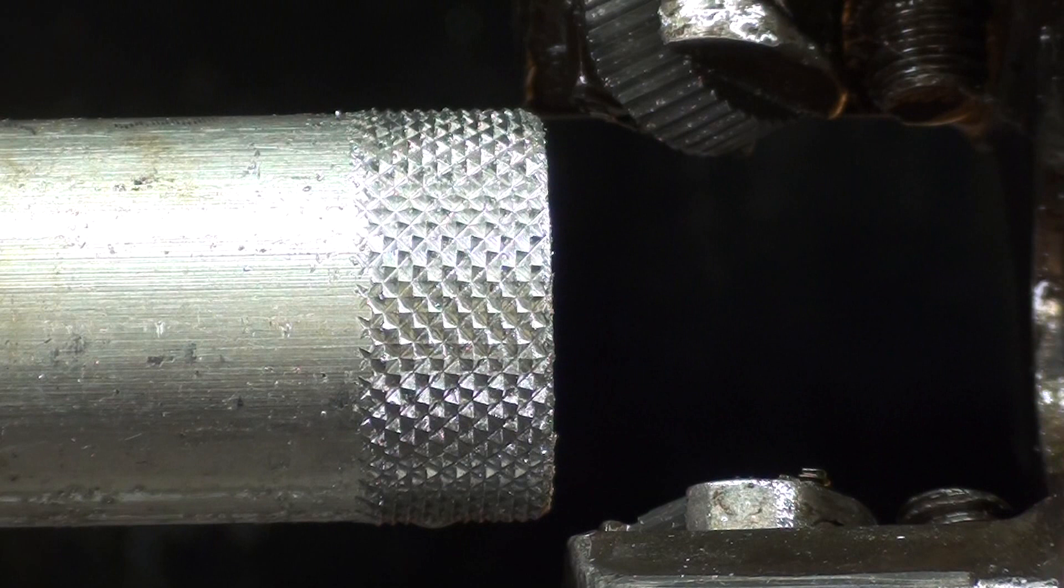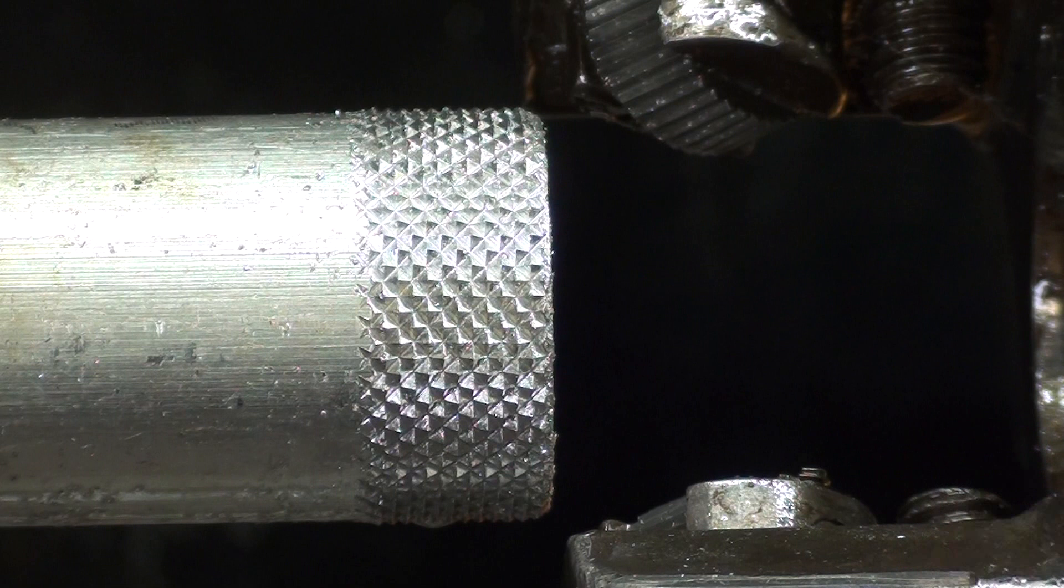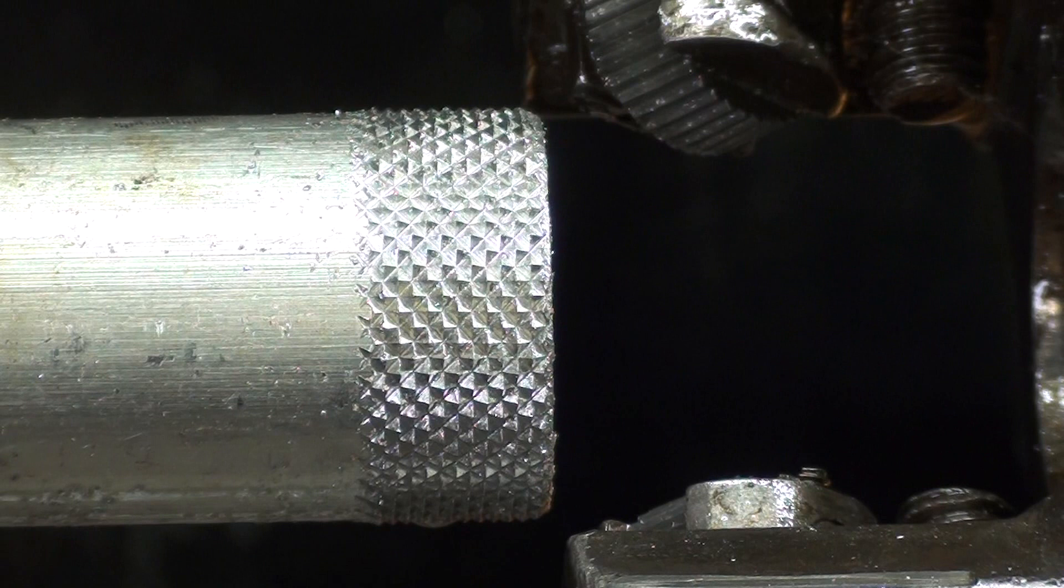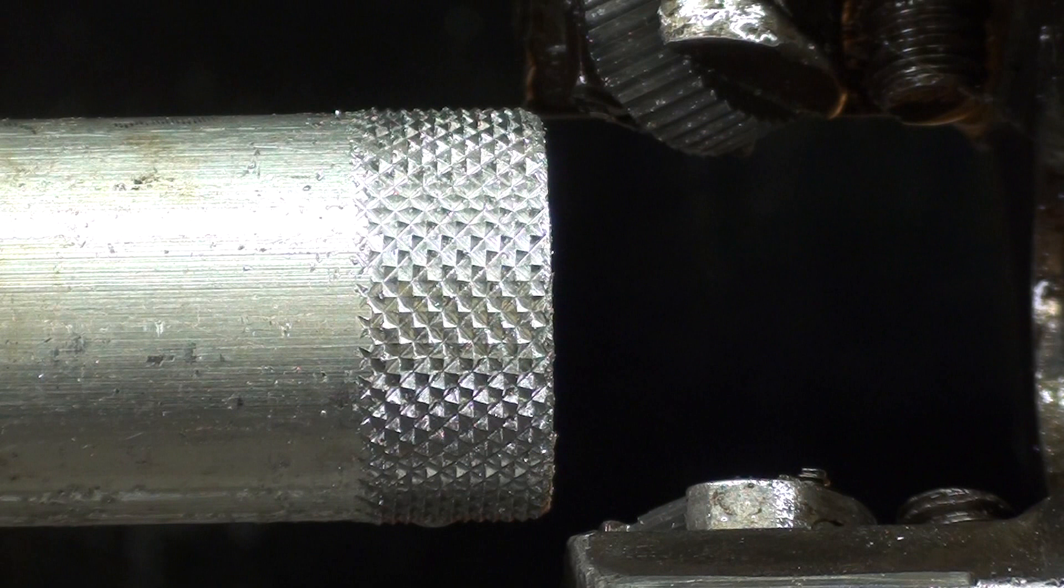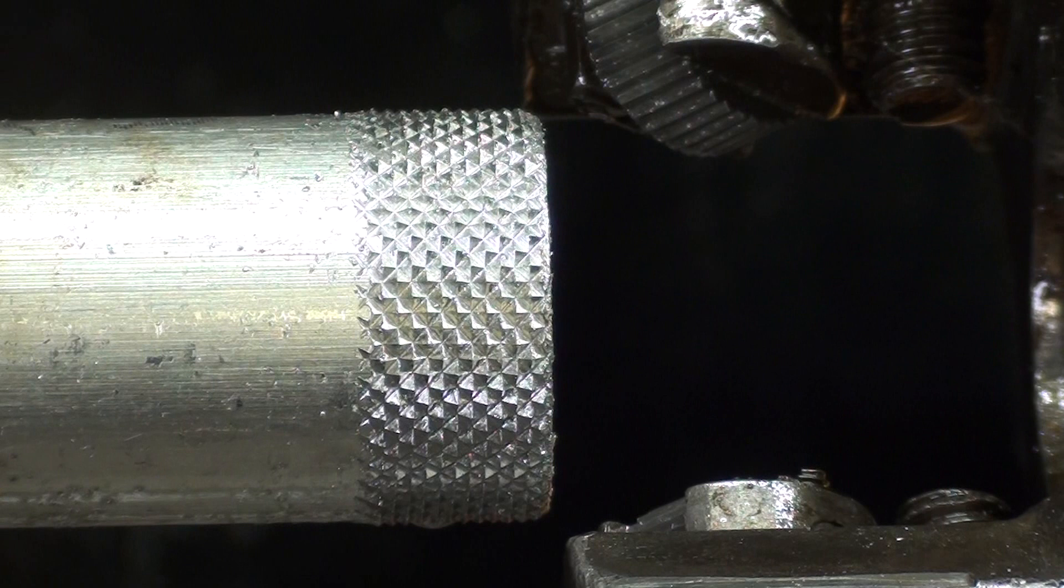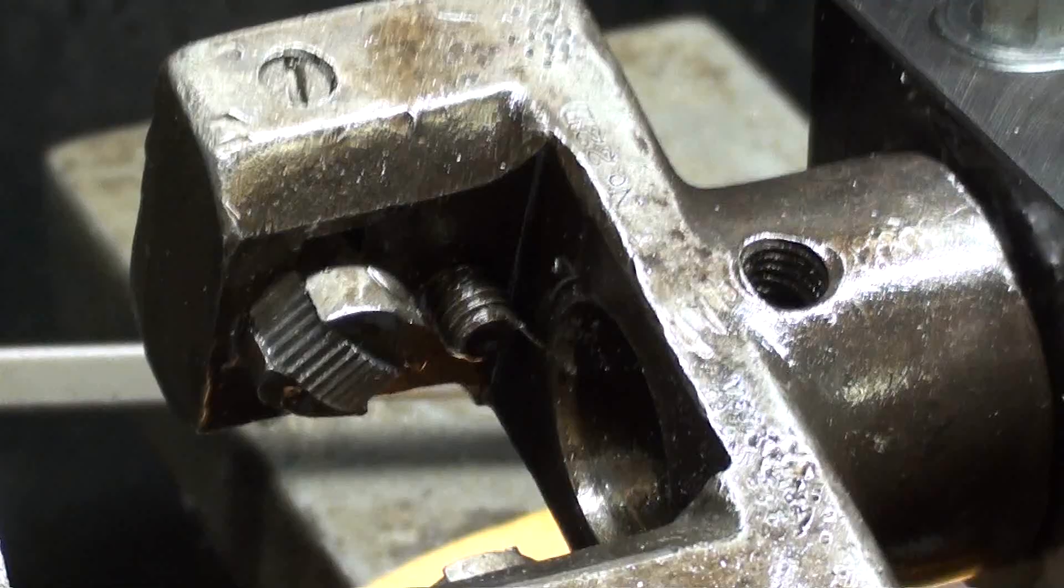So what I'm going to do now is loosen the screws here and change the rollers to 0 degrees instead of 45 degrees. Now 45 gives you a diamond shaped knurl. If you set it at 30, you'll get more of a square knurl, I'm not going to do that. I want to put a straight knurl on, because we often use a straight knurl, and they are good looking as well.